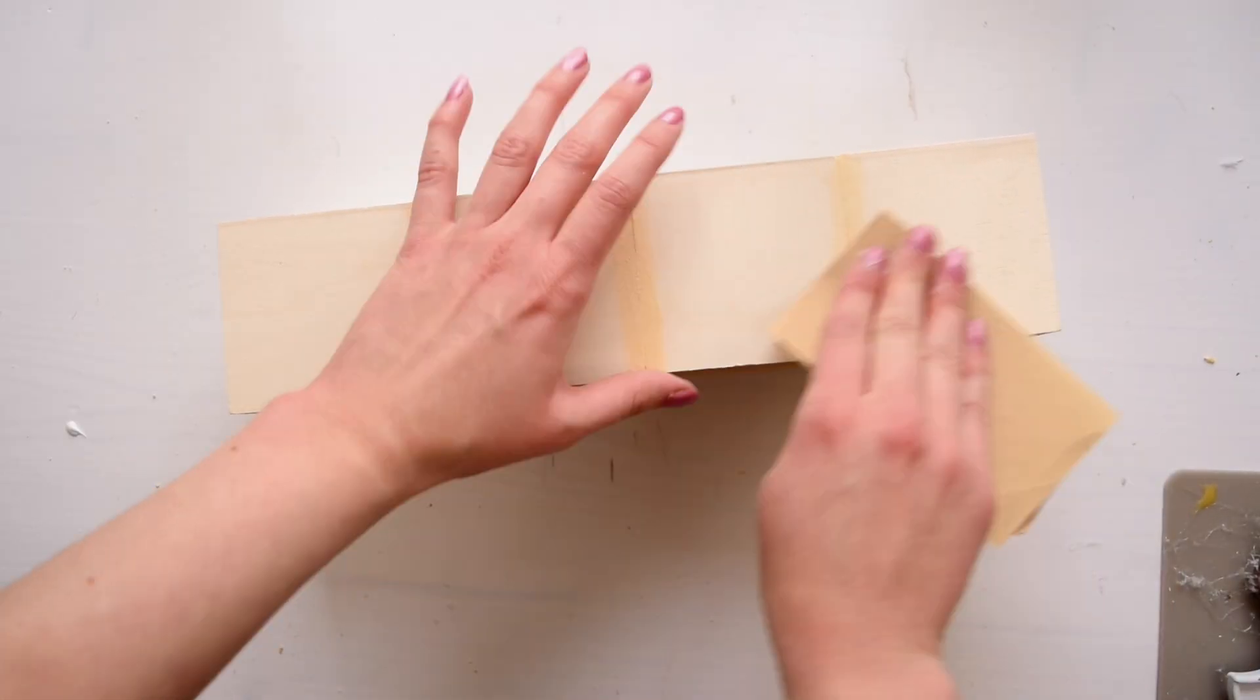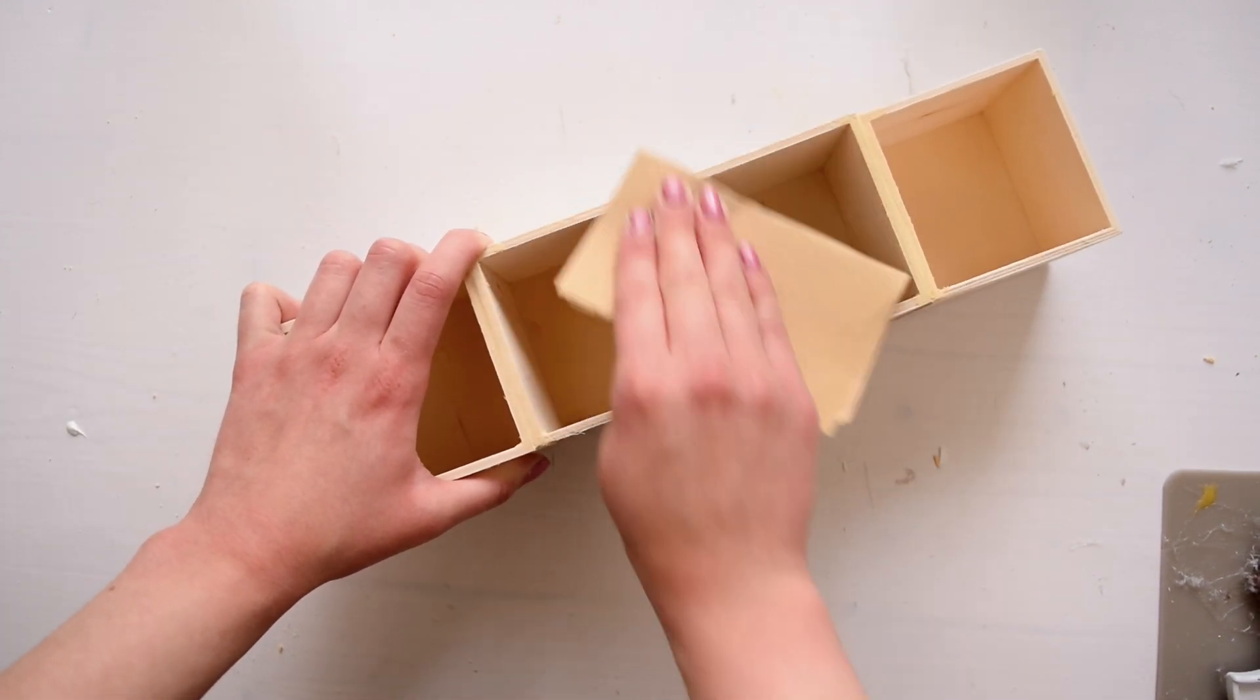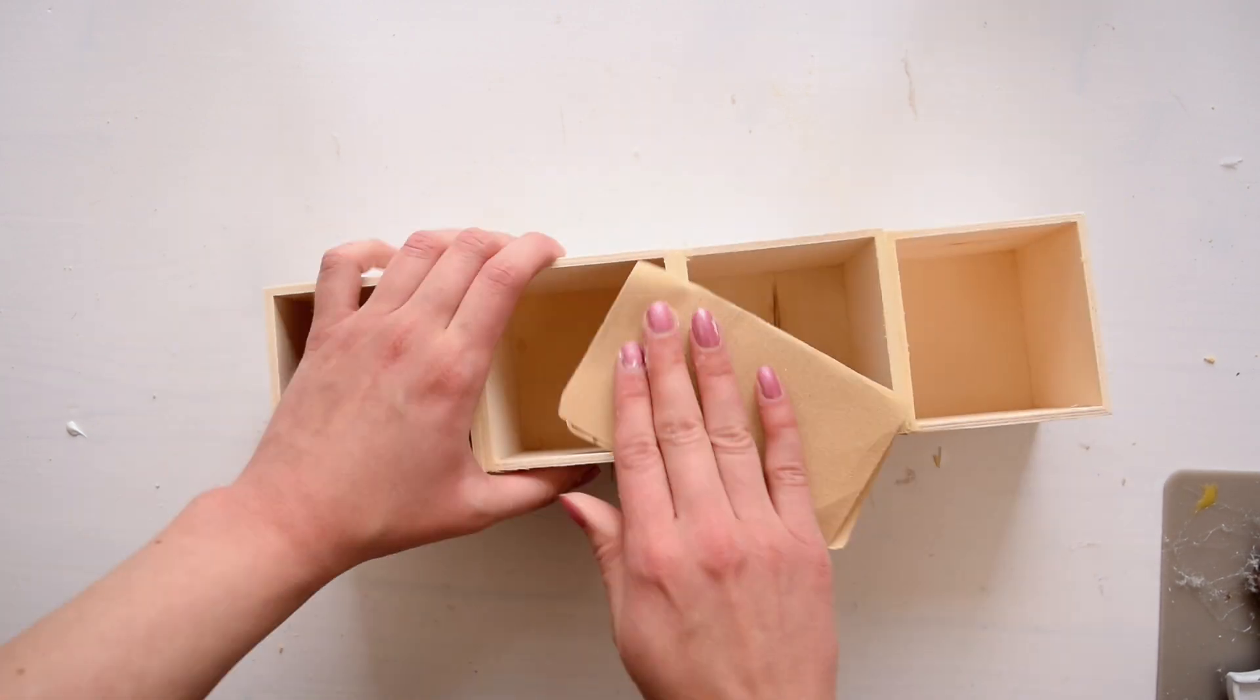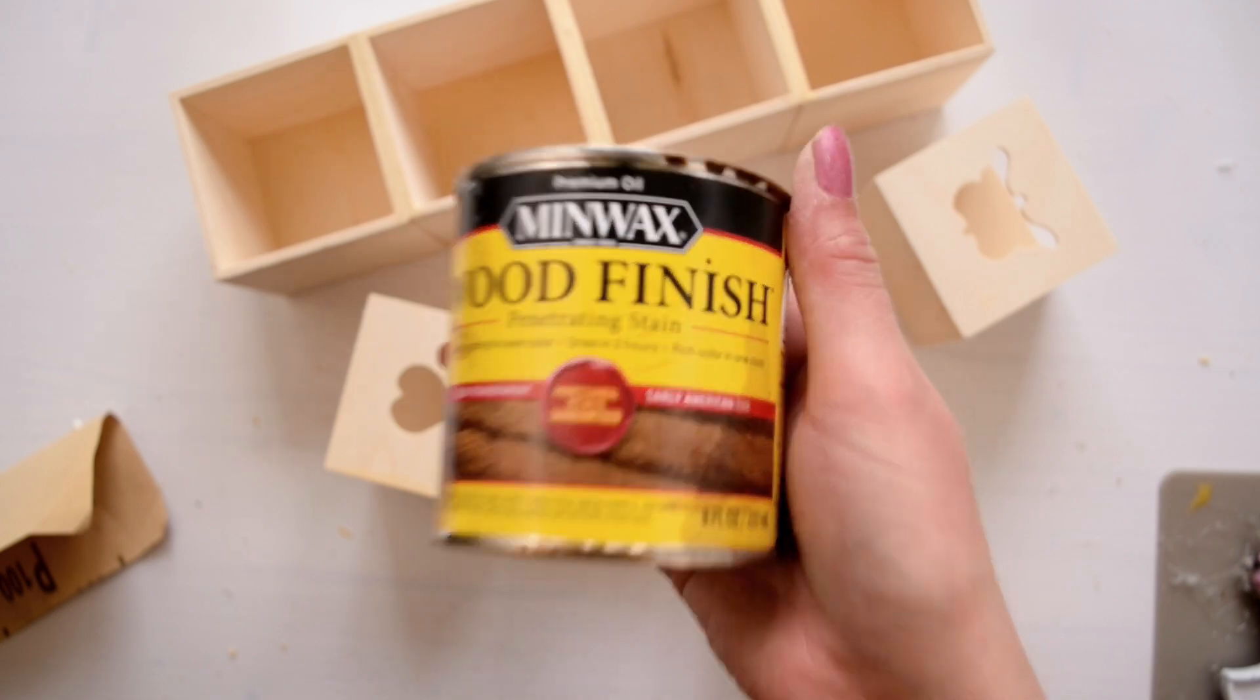Then to smooth it all down, I took a fine grit sandpaper and lightly rubbed along the wood filler areas. And then I used my favorite early American wood stain to stain all of the wood pieces and I just did this off camera.